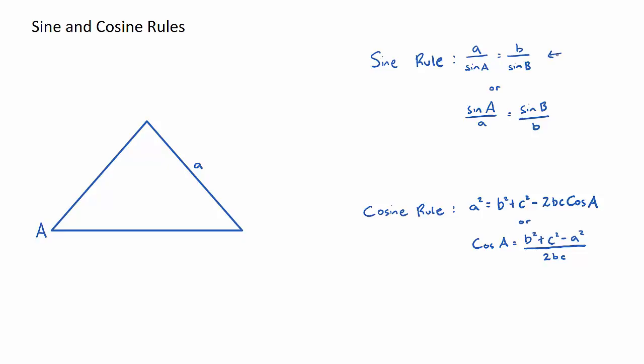However, I also like to use this one here, which is the exact same rule, just the fractions flipped on both sides, which is perfectly fine. So depending on if I'm looking to find a side, I'll probably use the top one. If I'm looking to find an angle, I'll probably use the bottom one.